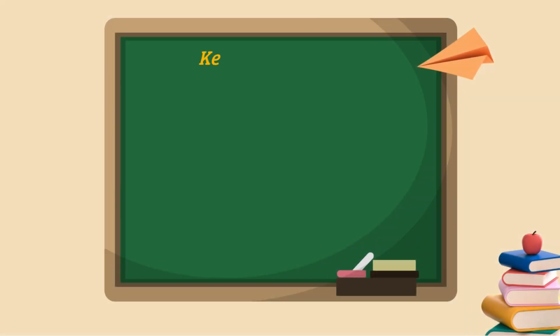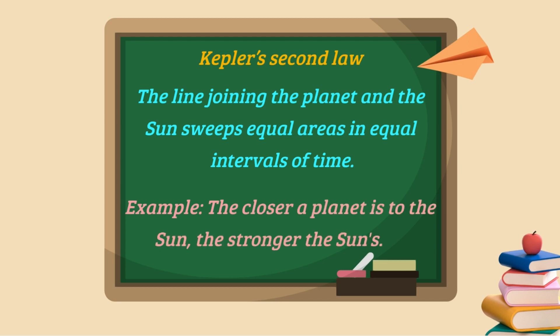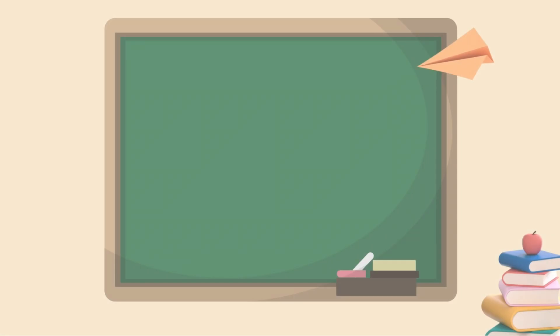Now let's move forward to Kepler's second law which states that the line joining the planet and the sun sweeps equal areas in equal intervals of time. You can understand it in a very easy way. For example, the closer a planet is to the sun, the stronger the sun's gravitational pull.